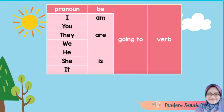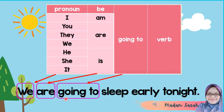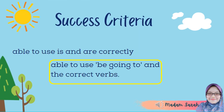Now that you are done, let's check your answer together. We are going to sleep early tonight. The pronoun is we, the verb to be is are, then we write going to, and the verb in this sentence is sleep. Did you get the answer right? Good job, you are awesome! Now you've achieved the second criteria, which is able to use be going to and correct verbs.